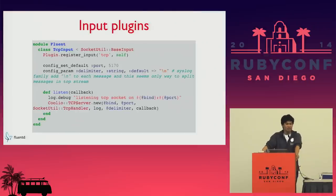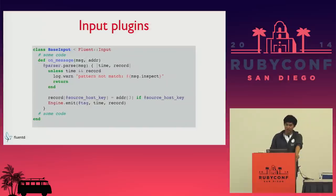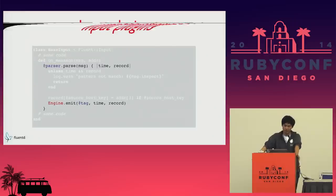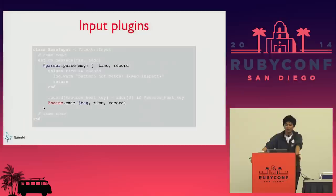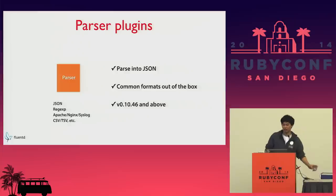Another less complex plugin is the TCP input — and I stripped out some lines, but much of the work is done by the superclass base input. In base input, the main on_message method has a parser instance variable that parses the message, producing a time and record that gets emitted into Fluentd with the tag you assigned.